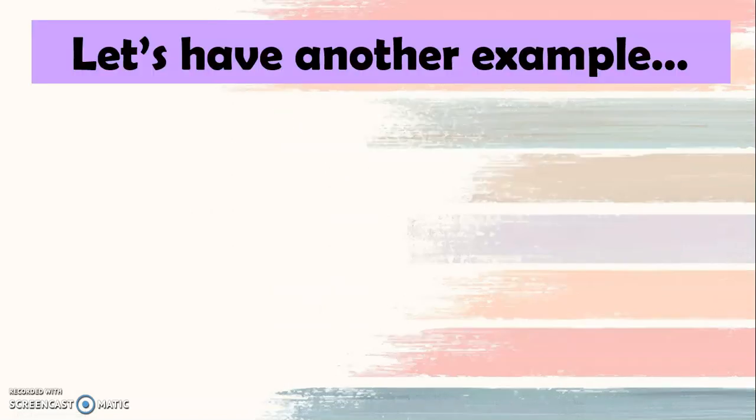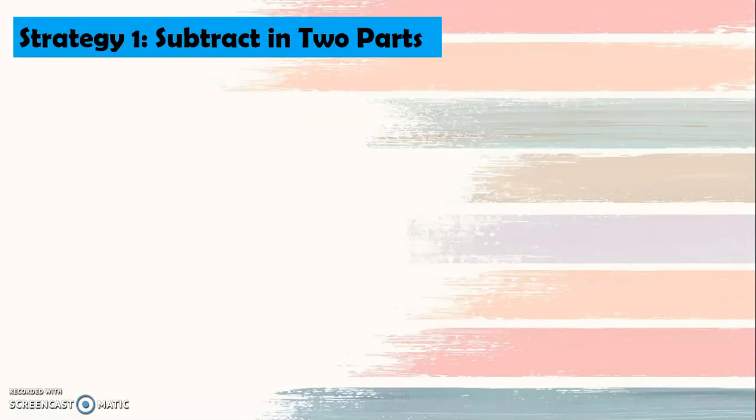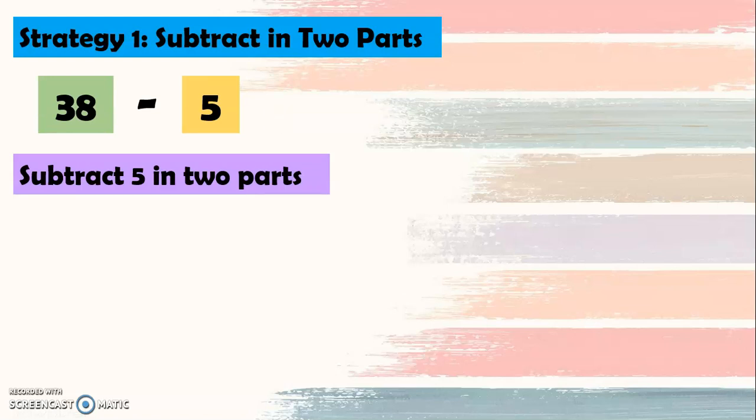Now, let's have another example. We are going to do strategy one again, which is subtract in two parts. So 38 minus 5. Subtract 5 in two parts. Again, we're going to think about two numbers that when we add them together, we will have the sum of 5. So 38 minus 3 minus 2, because 3 plus 2 equals 5.